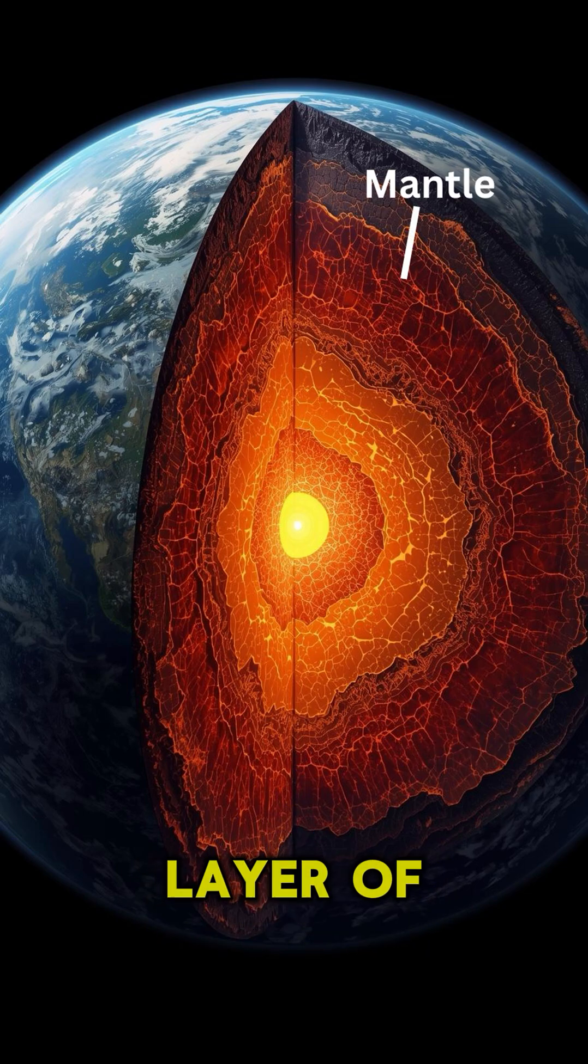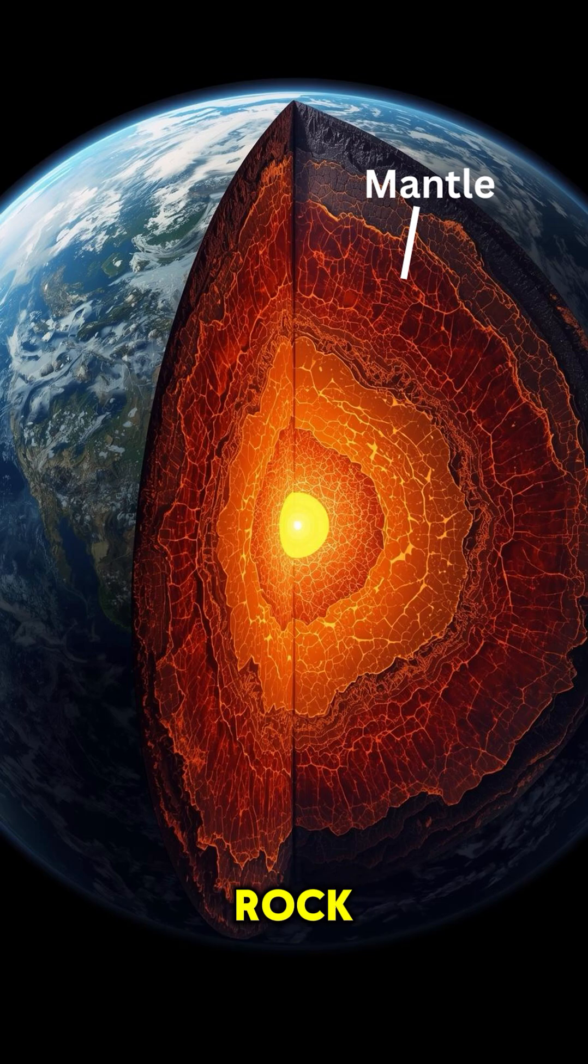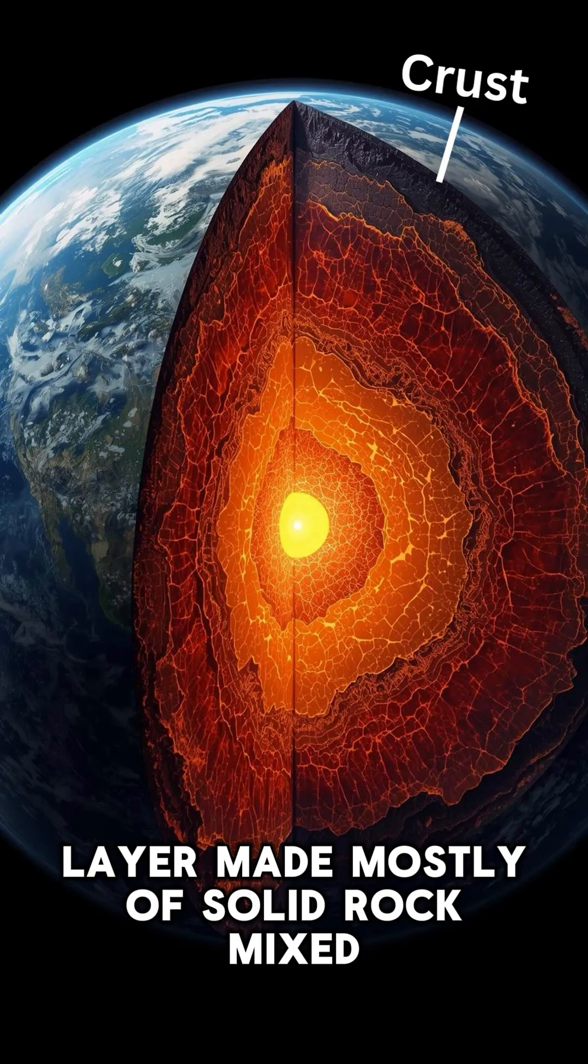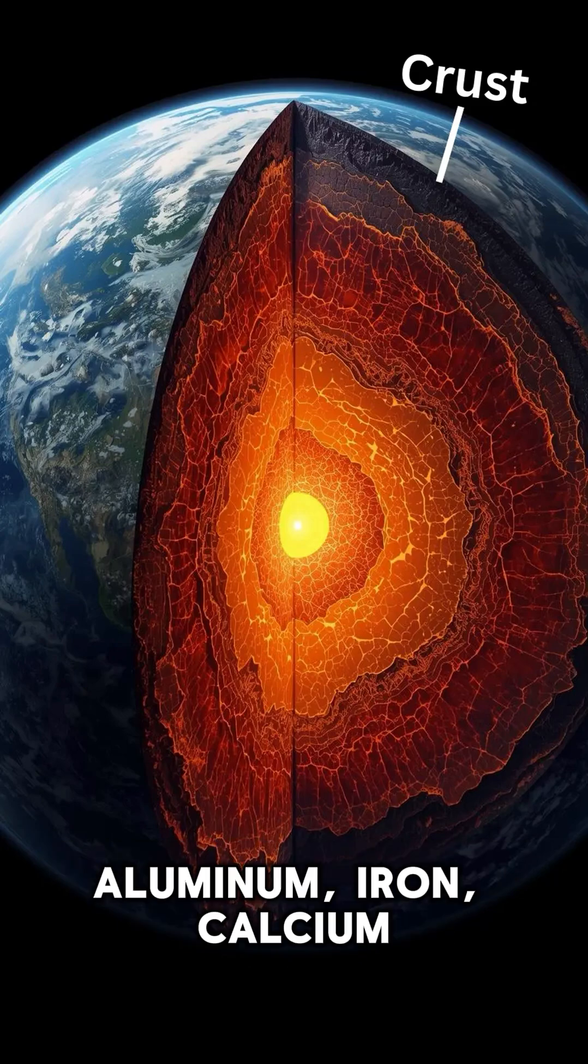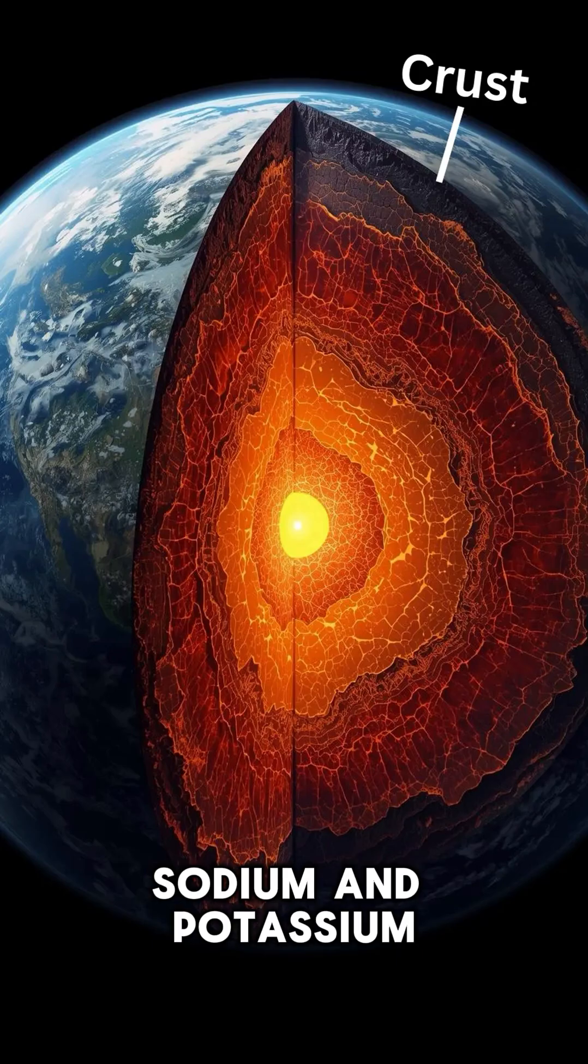The mantle is a very thick layer of hot, solid rock, and the crust is the thin outer layer made mostly of solid rock, mixed with a few other elements like aluminum, iron, calcium, sodium, and potassium.